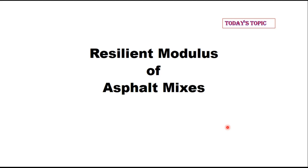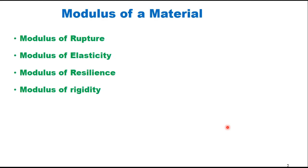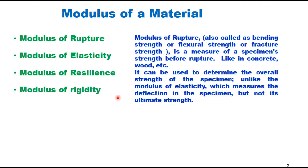There are several terms used in relation to the modulus, and let us first understand the difference between these terms to avoid any confusion in the later part of this session. The first is the modulus of rupture, the next is modulus of elasticity, modulus of resilience, and modulus of rigidity. The modulus of rupture, also called bending strength or flexural strength, is a measure of specimen strength before rupture. It is mostly used in concrete technology and can be used to determine the overall strength of the specimen.